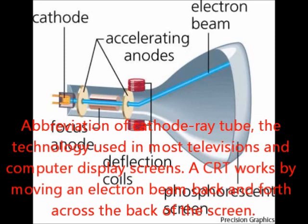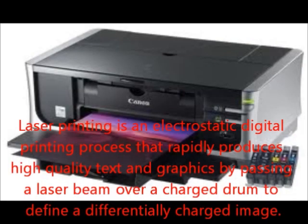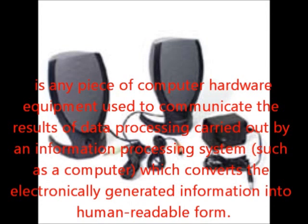A CRT works by moving an electron beam back and forth across the back of the screen. Next is inkjet printers — a type of computer printing that creates a digital image by propelling droplets of ink onto paper, plastic, or other substrates. Next is laser printers — an electrostatic digital printing process that rapidly produces high-quality text and graphics by passing a laser beam over a charged drum to define a differently charged image. Next is audio output device — any piece of computer hardware used to communicate the results of data processing, converting electronically generated information into human-readable form.